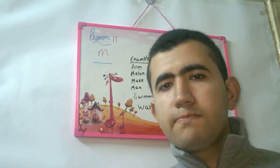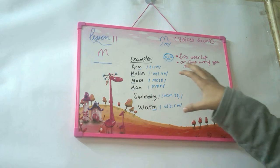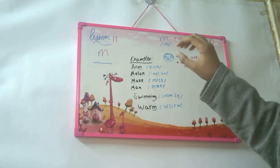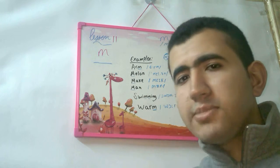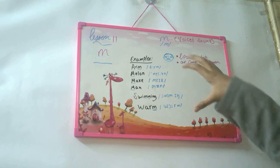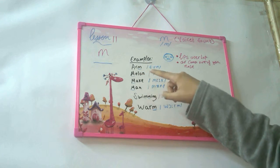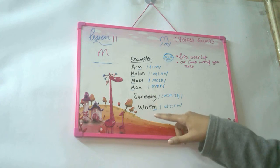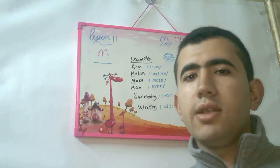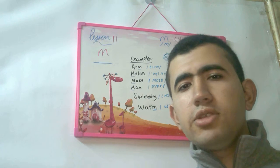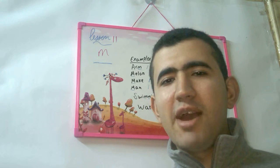So this is our lesson for today. We have learned that M has one sound, which is mm. The air comes out of your nose. These are the phonetics and these are the examples: arm, melon, make, man, swimming, and warm. Your lips overlap and air comes out of your nose. If you have any questions, put them below. Thank you for watching this video and see you soon. Bye-bye.